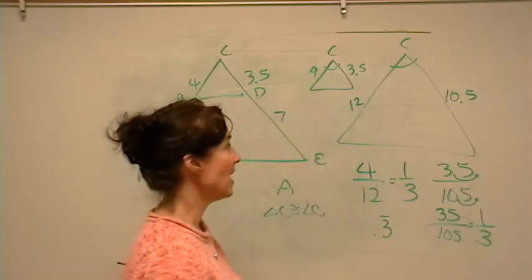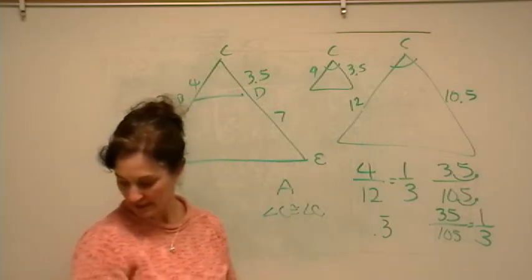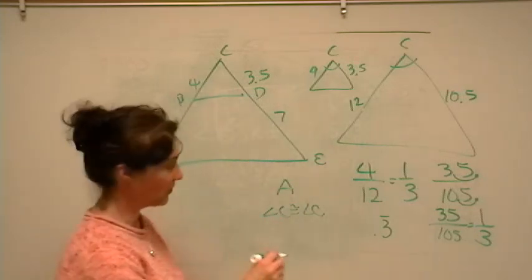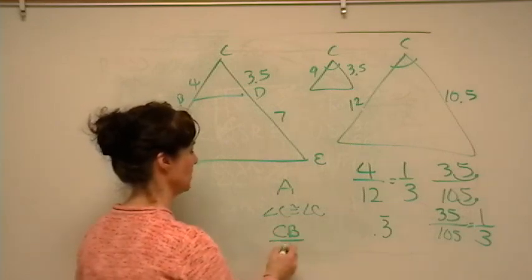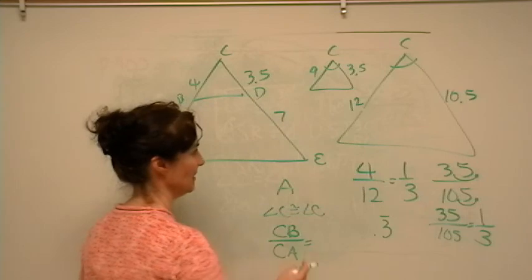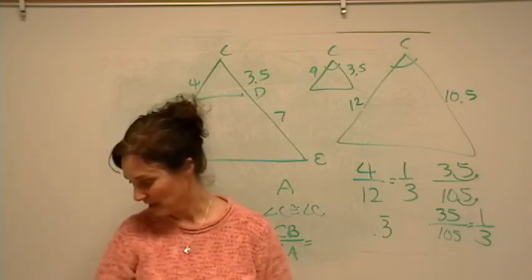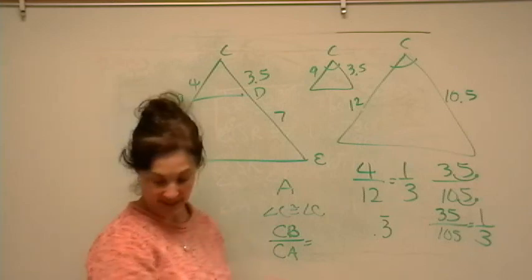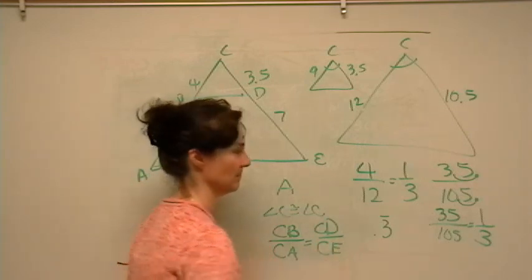Okay, so now we've proven that the sides are proportional. We know that CB is related to CA. CB over CA is congruent to, or equal to, CD over CE. Okay.